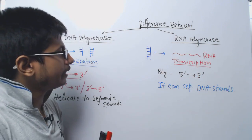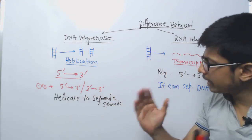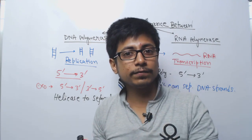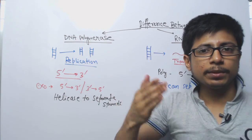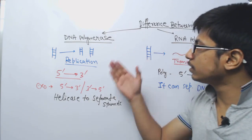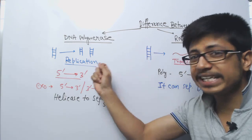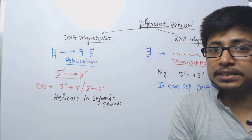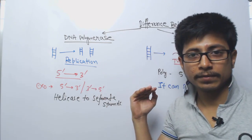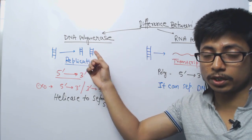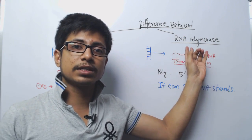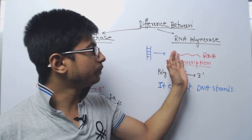In both DNA replication and transcription, the main function of these enzymes is polymerization. In the case of DNA polymerase, it will polymerize deoxyribose nucleotides; in the case of RNA polymerase, it will polymerize ribose nucleotides. Importantly, DNA polymerase cannot initiate polymerization on its own — it can only extend if there is a free three prime hydroxyl group present on the template. RNA polymerase, however, does not require any existing nucleotide to begin — it can start the process of transcription and polymerization on its own from the beginning.